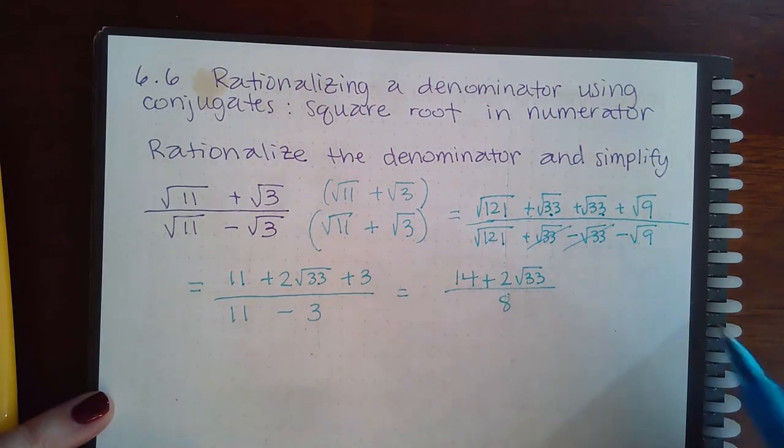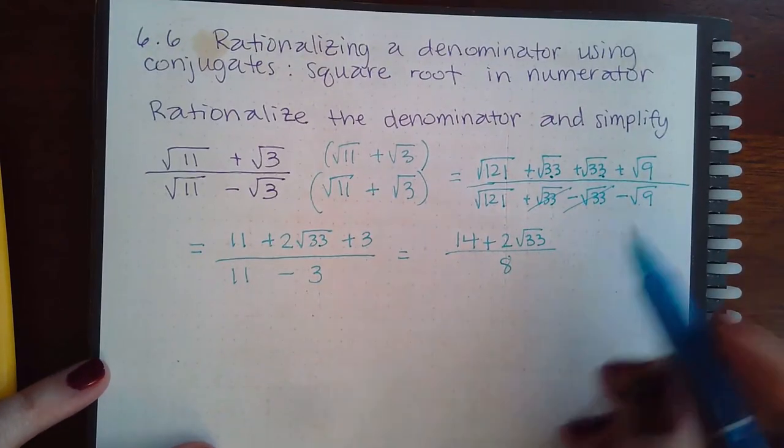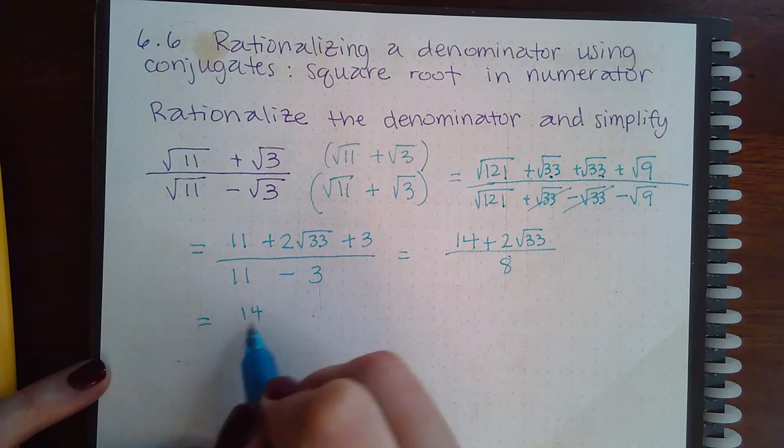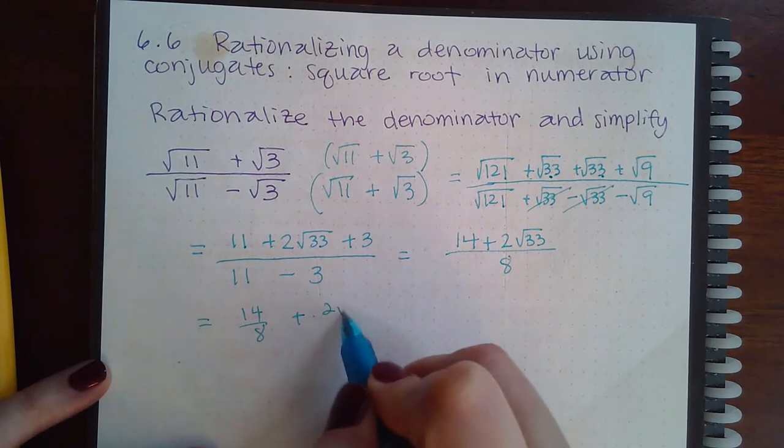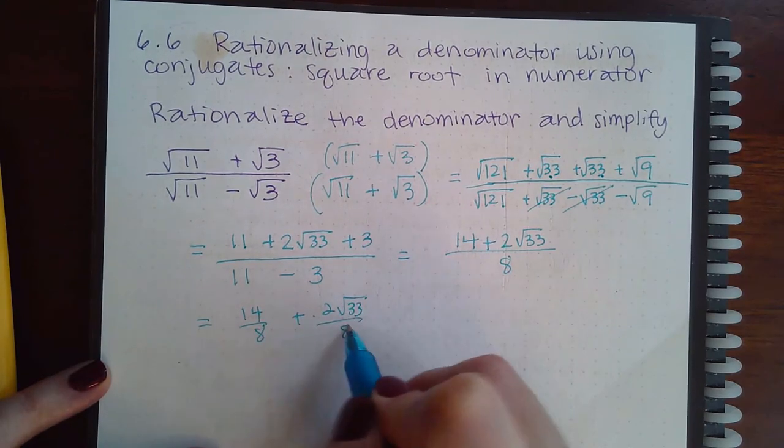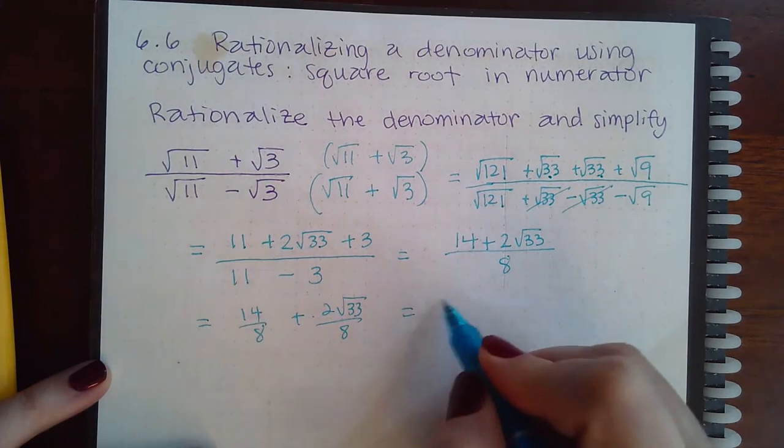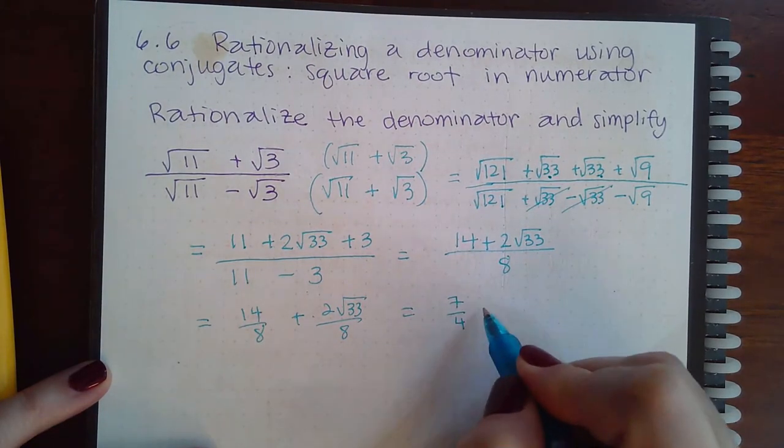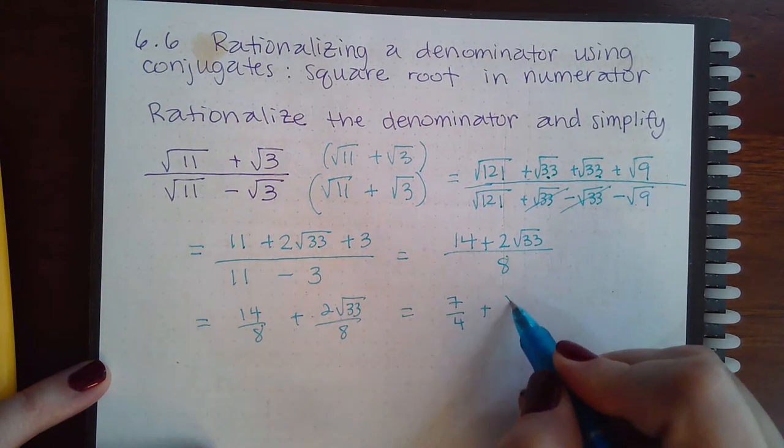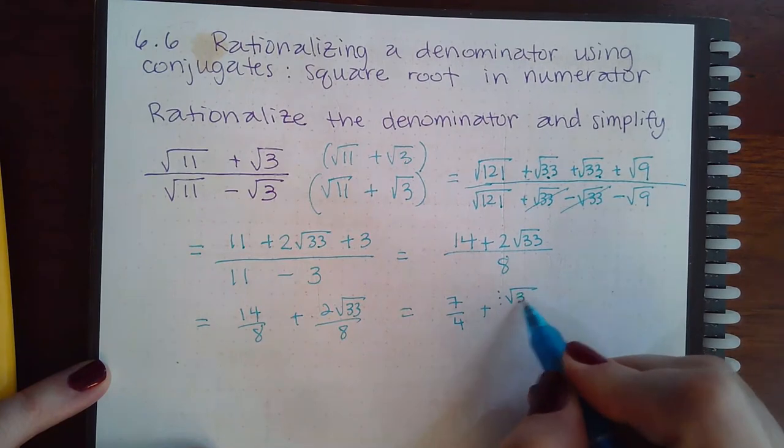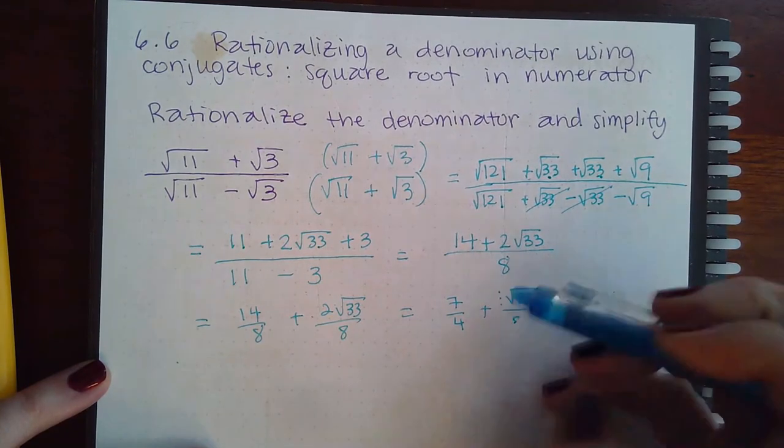Now 8 can reduce with these numbers that are outside the radical, so I will have to separate the fraction and reduce both fractions. So these I can reduce by 2, giving me 7 over 4. And these I can reduce by 2, giving me an invisible one and a 4.